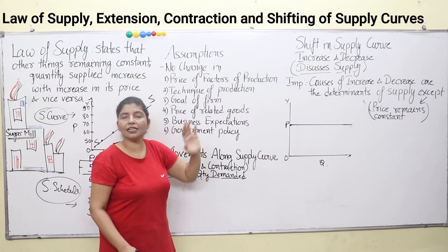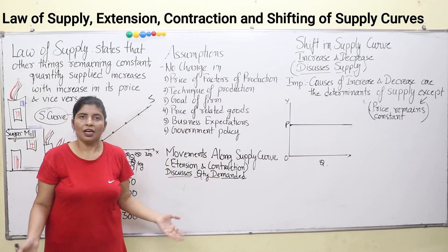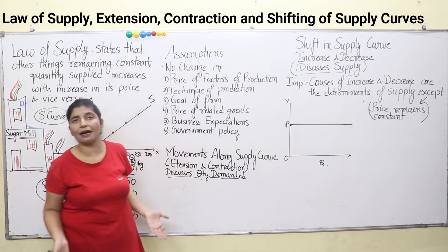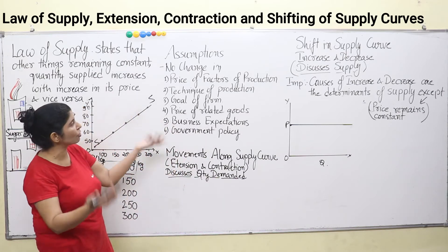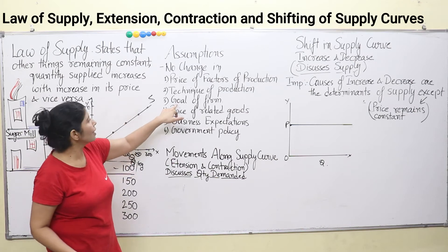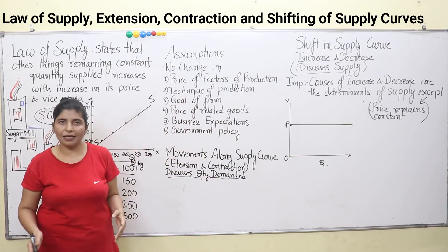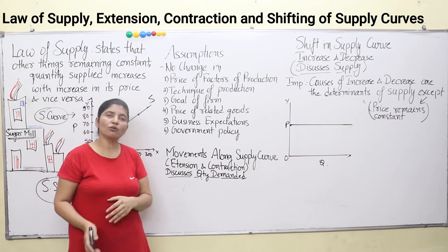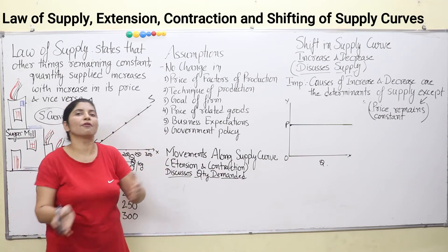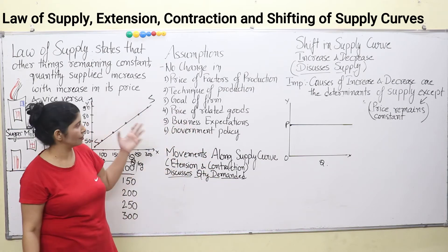Then, the technique of production does not change — it remains the same. You don't buy a new machine, and you do not go bankrupt, losing all your machines or having them depreciate or break down. Then, goal of the firm: your goal hasn't changed. That means you don't shift from a goal of higher sales to higher profit — your goal remains the same.